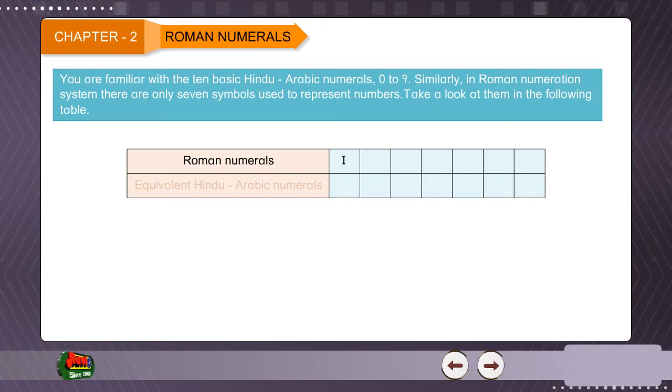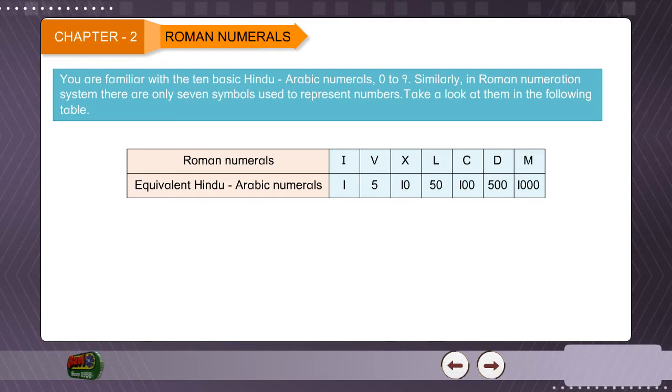Roman numerals: Roman numeral 1 represented by letter I, Roman numeral 5 represented by letter V, Roman numeral 10 represented by letter X, Roman numeral 50 represented by letter L, Roman numeral 100 represented by letter C, Roman numeral 500 represented by letter D, Roman numeral 1000 represented by letter M. Equivalent Hindu-Arabic numerals: 1, 5, 10, 50, 100, 500, 1000.